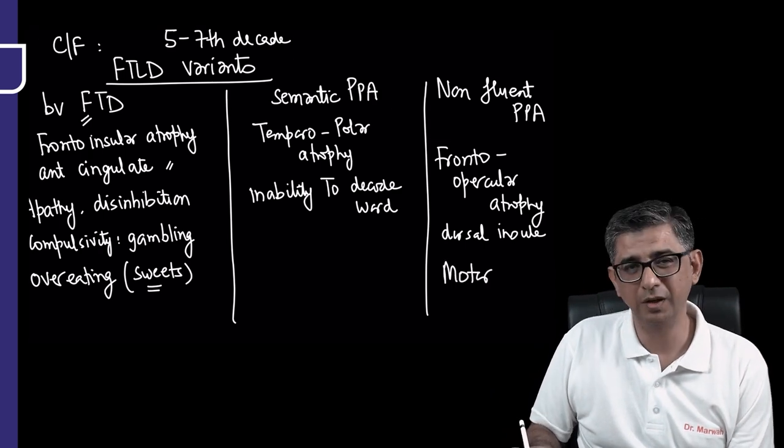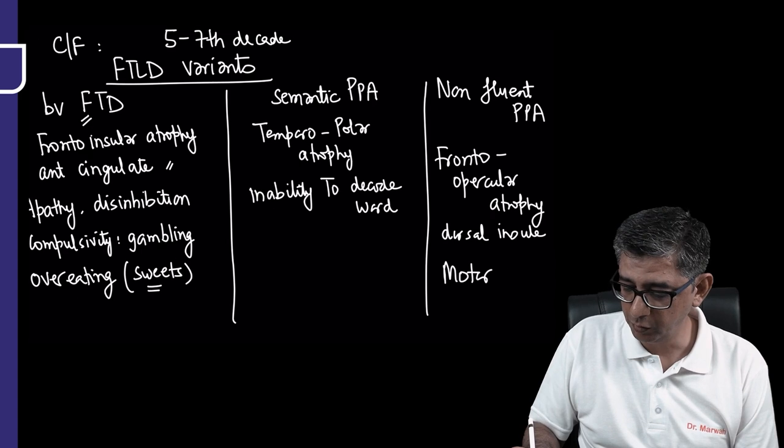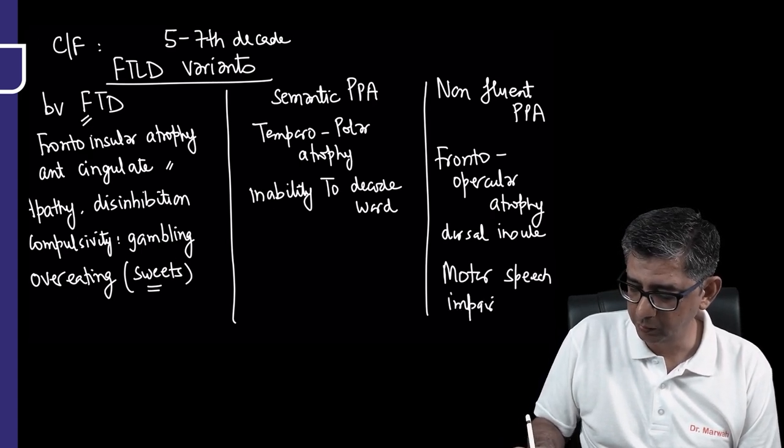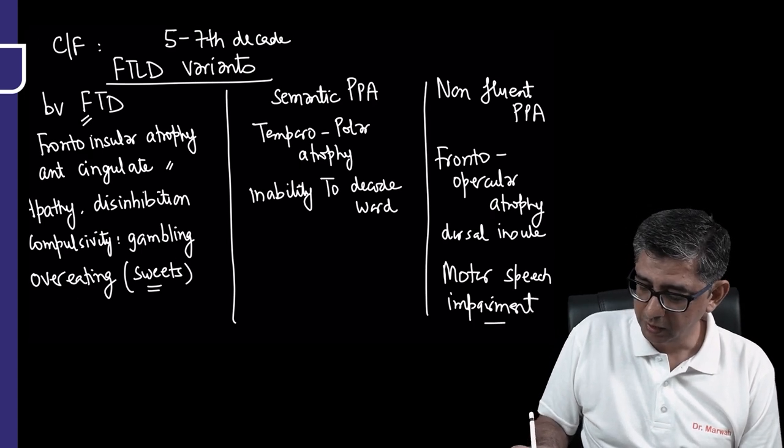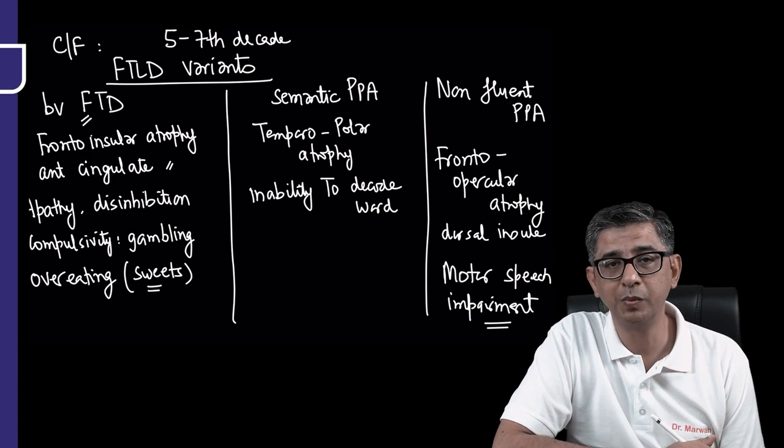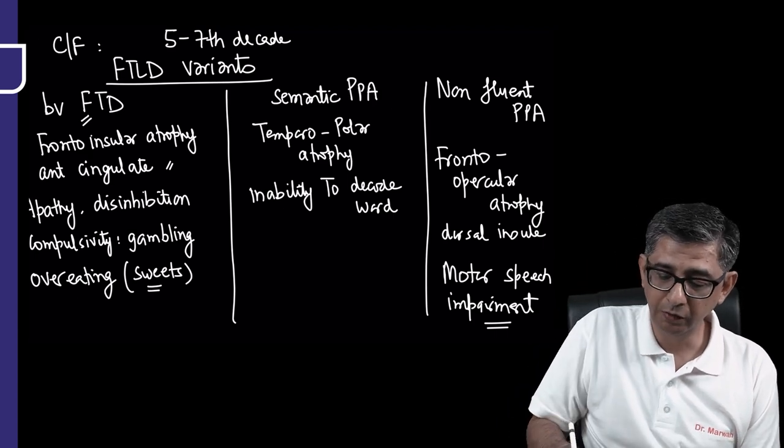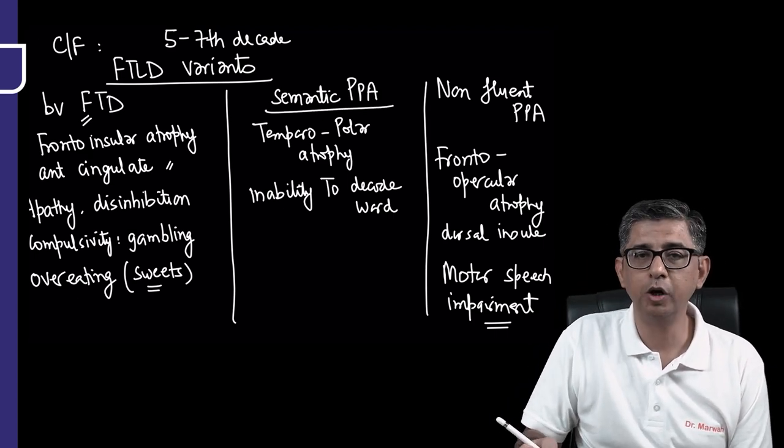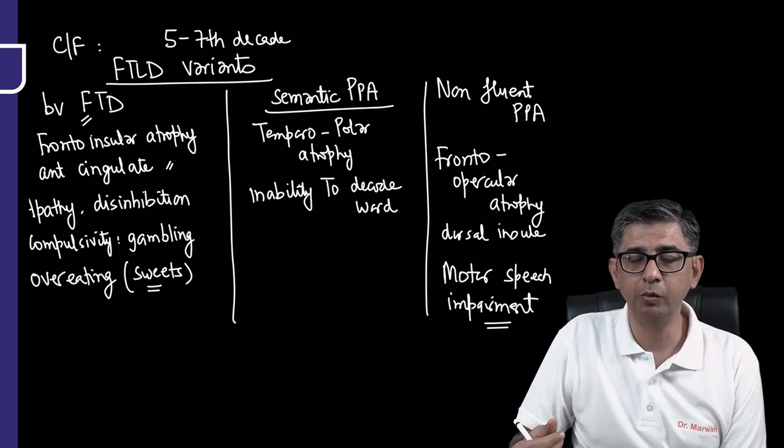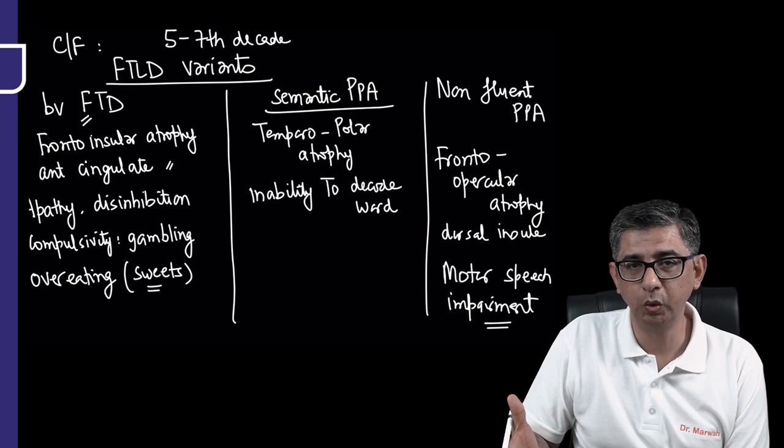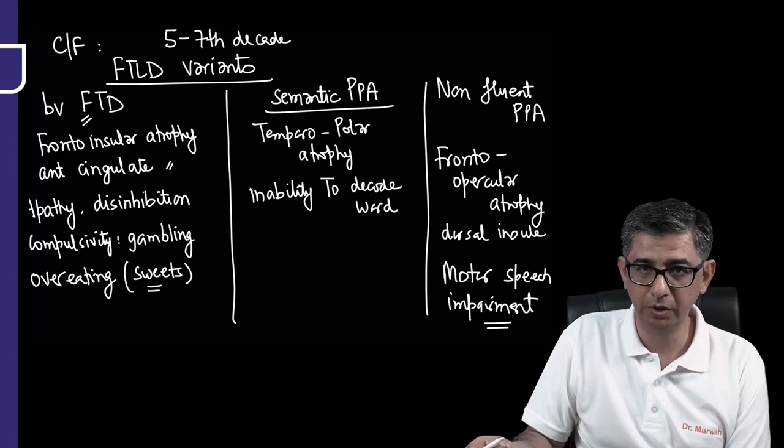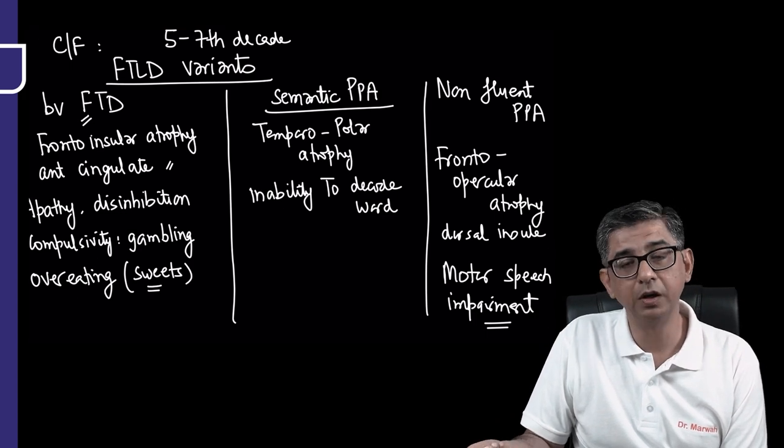As the name suggests, it is motor speech impairment - the person will not be able to speak fluently. He'll be able to understand, unlike the person in the middle who's not able to understand. This person will be able to understand but he'll not be able to express himself. For the semantic variety, the person will not be able to understand the command or words. In contrast, the non-fluent variety will be able to understand the words but not be able to speak.